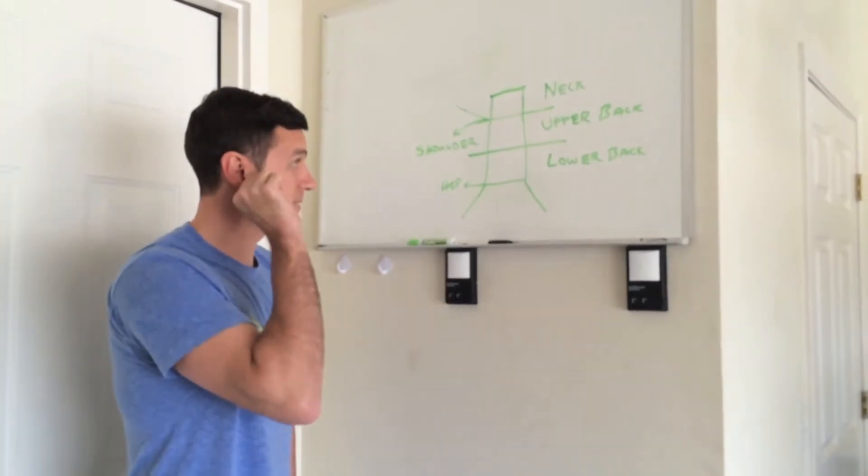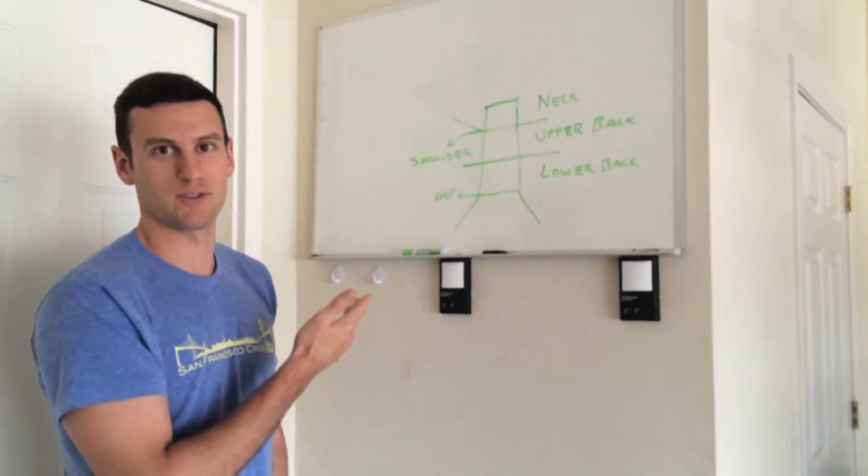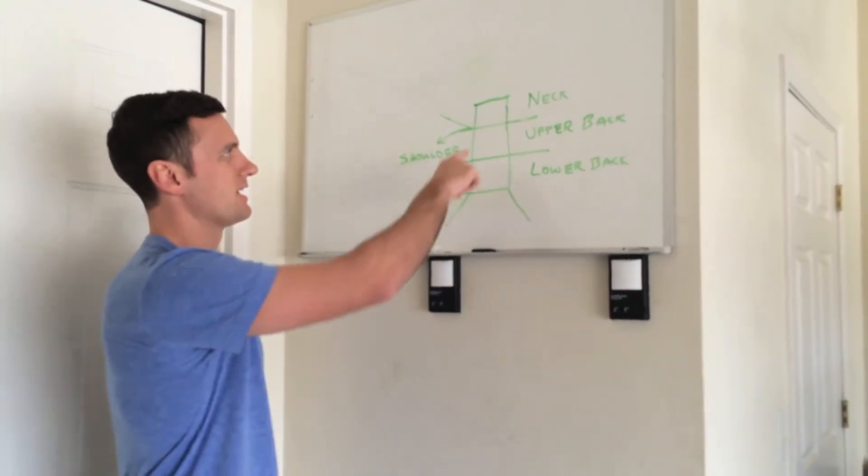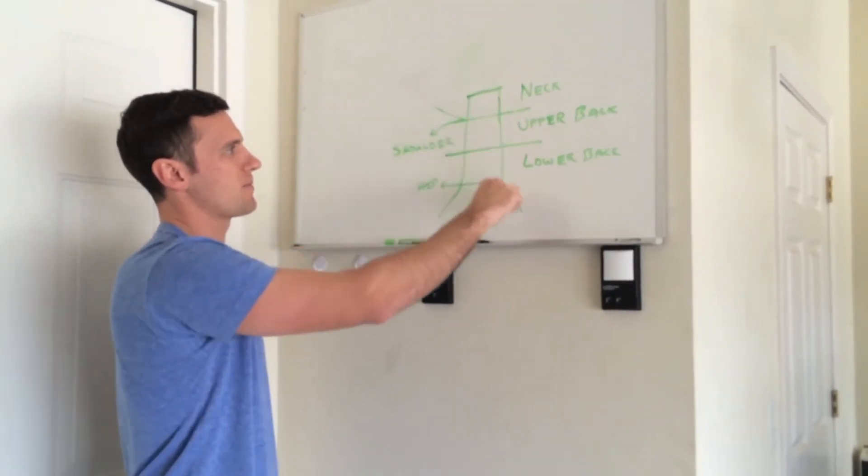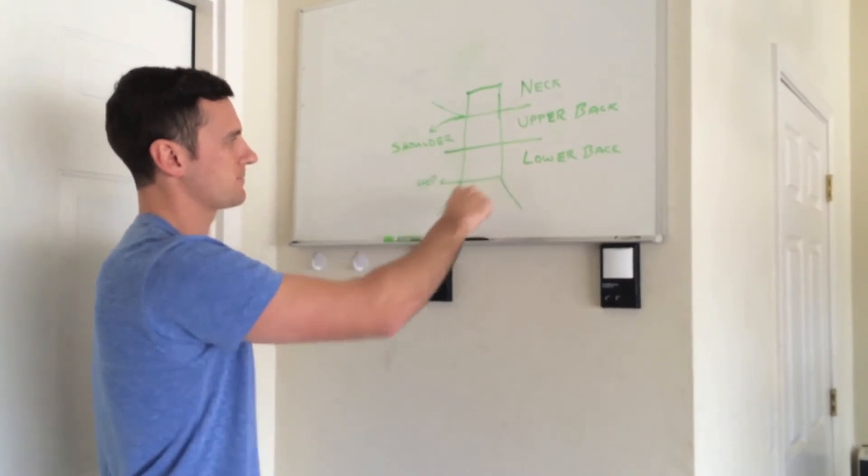So this is a pretty rough drawing of the human body. This would be where your head is. This is your neck. This is your upper back and this is your lower back right here.